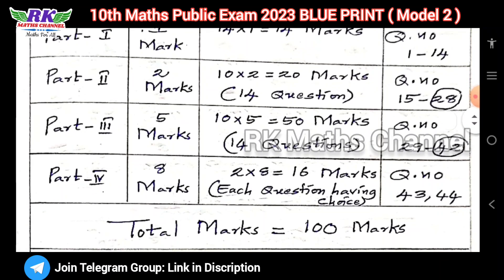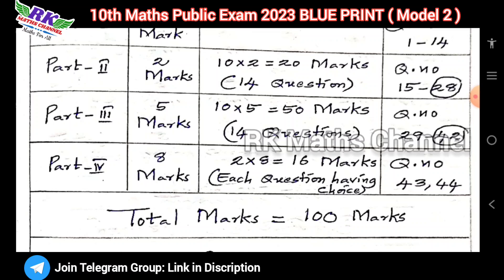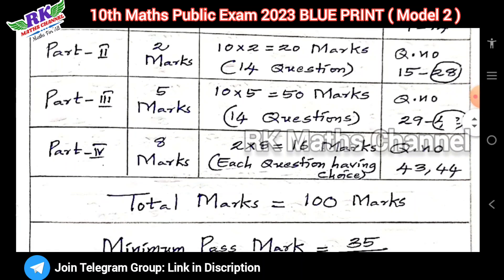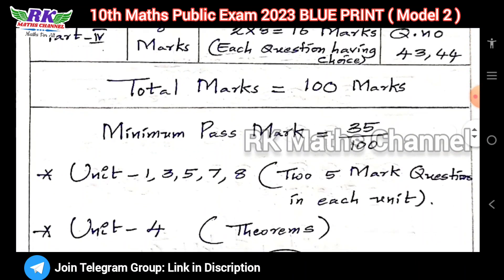Part 4 has 8-mark questions — 2 questions on graph and geometry. Question numbers are 43 and 44. So total marks is 100 marks.